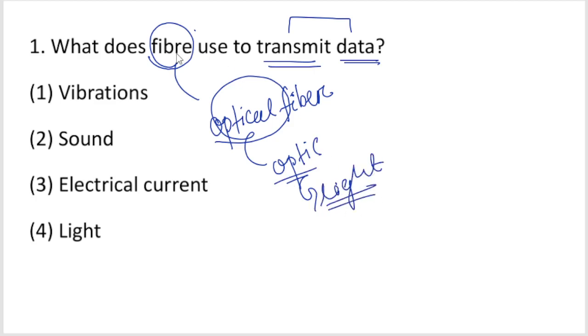Optical fiber is used for internet connections and cable connections. Internet data is transferred using optical fiber. The right answer is light - fiber uses light to transmit data.